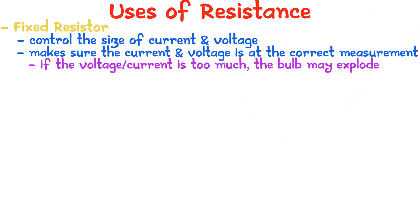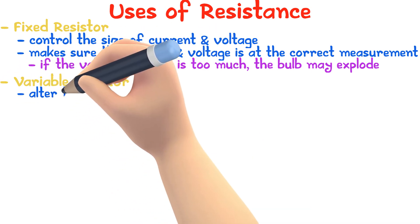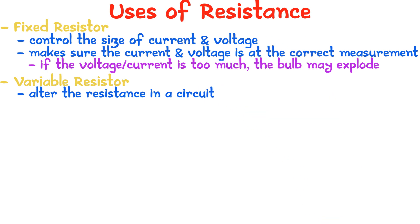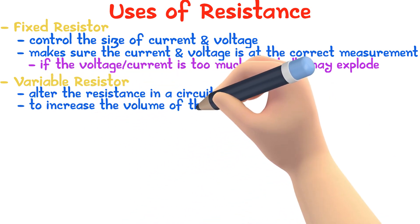Another use of resistance is the variable resistor. You can use a variable resistor to alter the resistance in a circuit. For example, to increase the volume of the radio.